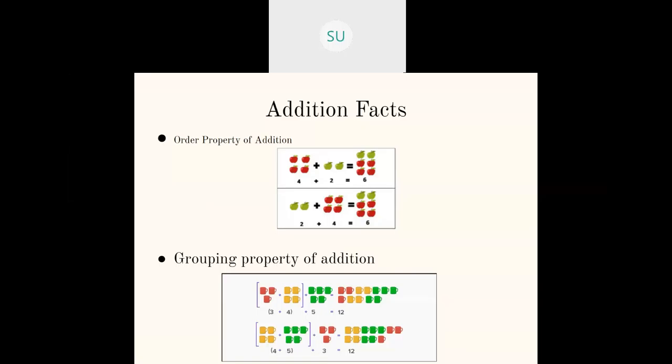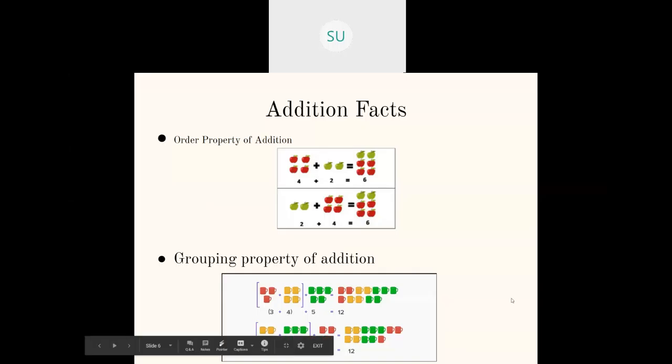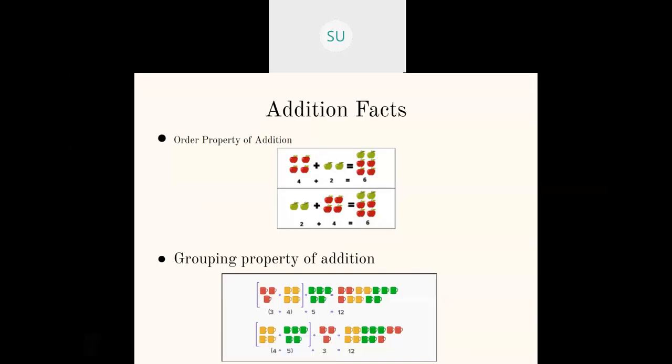Then we have the grouping property of addition. Here we have 3 numbers instead of 2, and whatever order you add these 3 numbers, the total remains the same. For example, 3 plus 4 plus 5 equals 12. Instead of adding 3 plus 4 first and then adding 5, we can add 4 plus 5 first and then add 3 — and we still get 12. So any 3 numbers, when added in any order, give the same answer. This is the grouping property of addition.